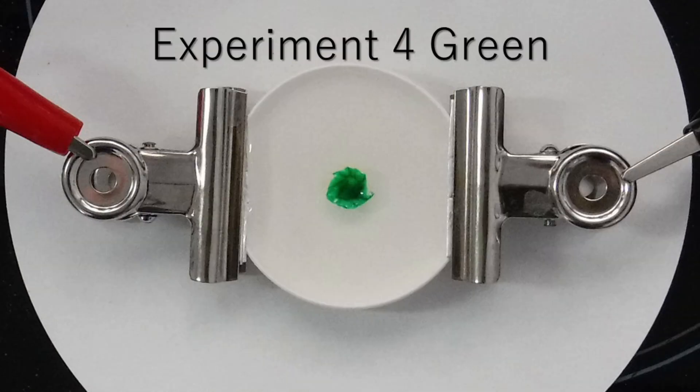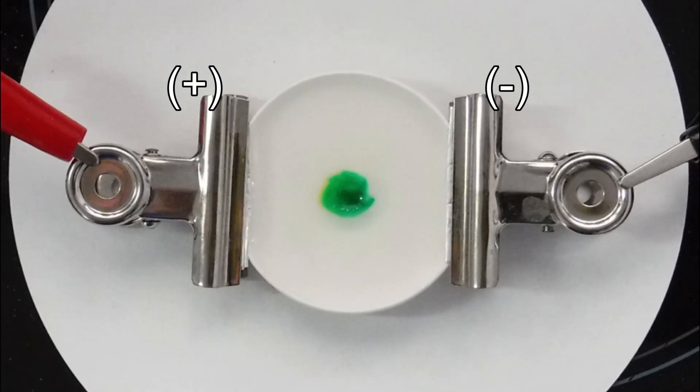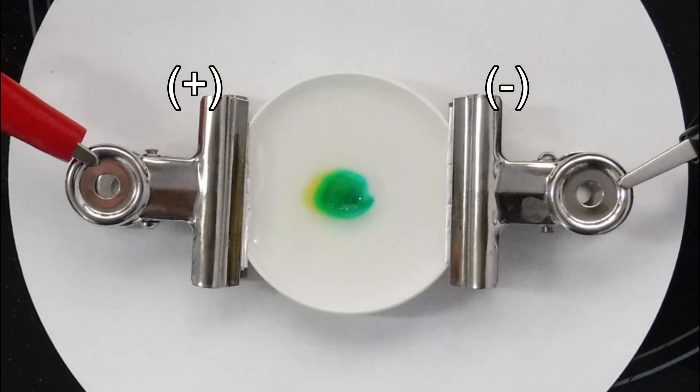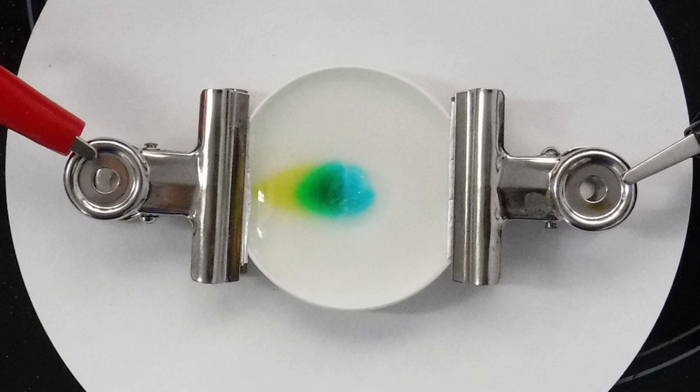The last experiment is green color. Yellow color moved faster than blue color because its molar mass is smaller than blue one.